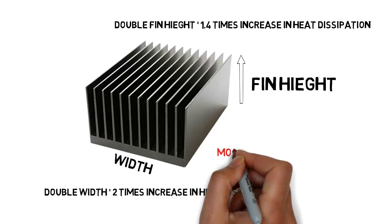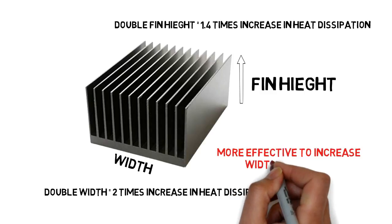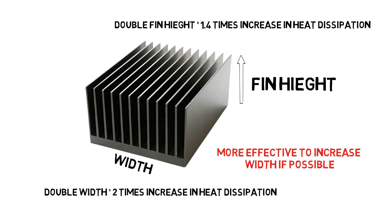Therefore, the priority number one should be to select a heat sink for the maximum allowable width rather than the maximum allowable fin height. Because space is a restriction in most cases, you should endeavor to increase the width of the heat sink rather than the height.